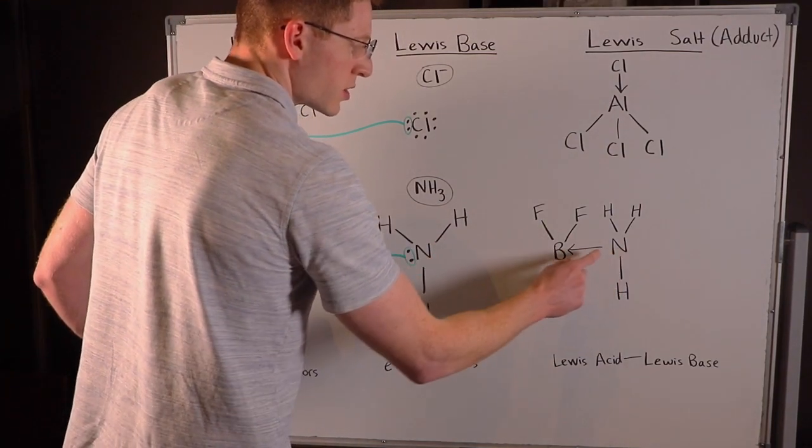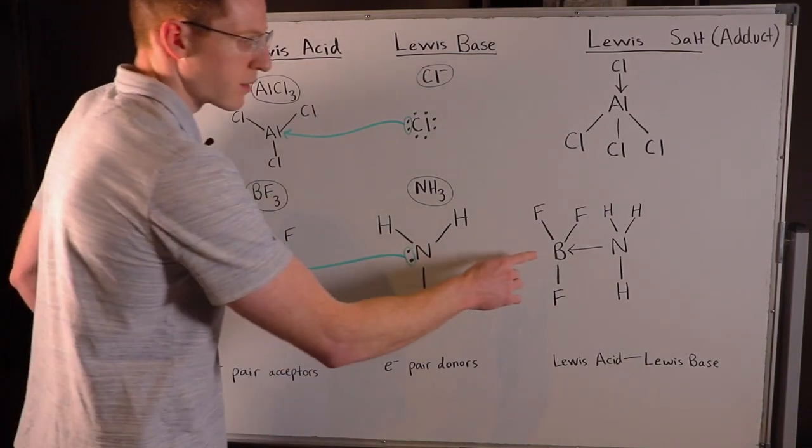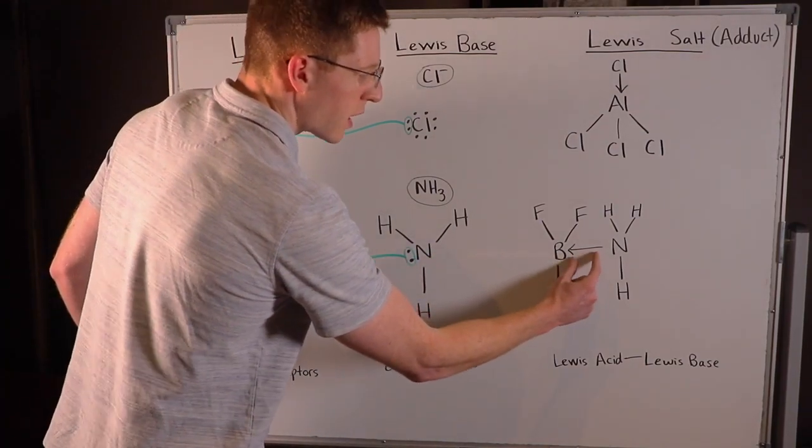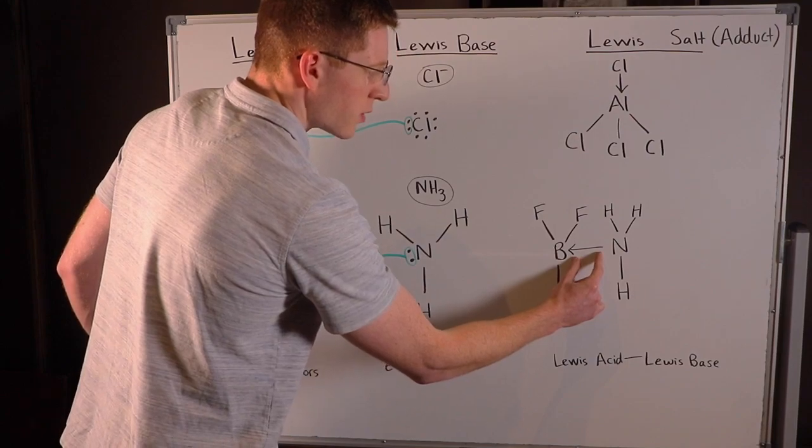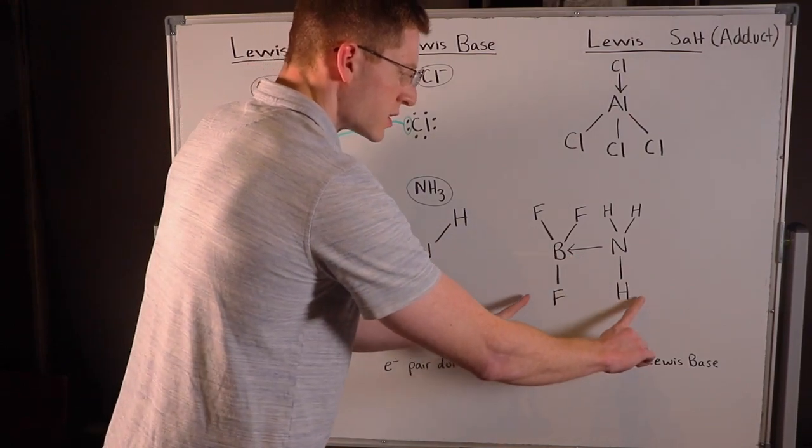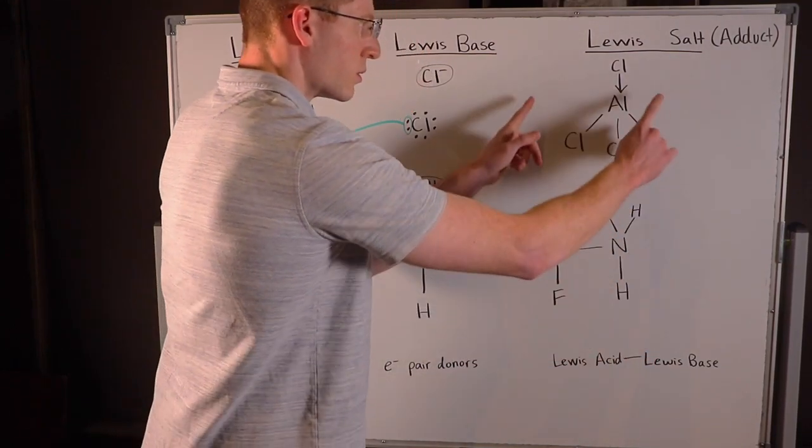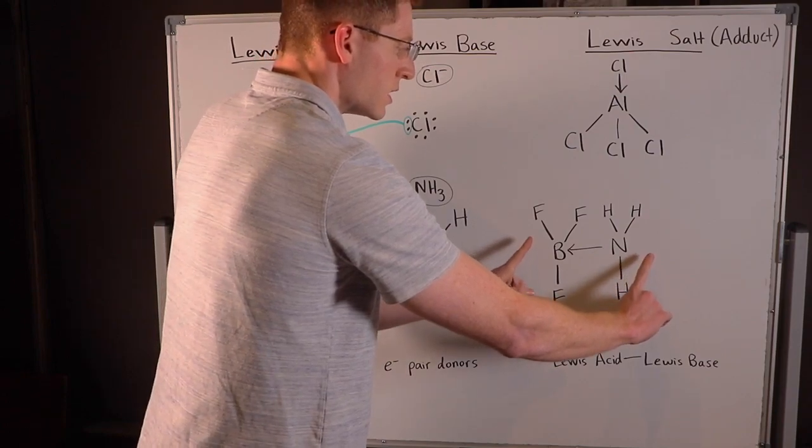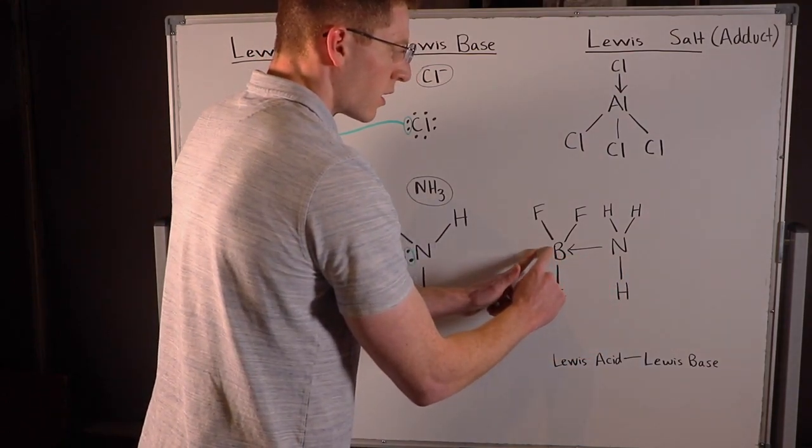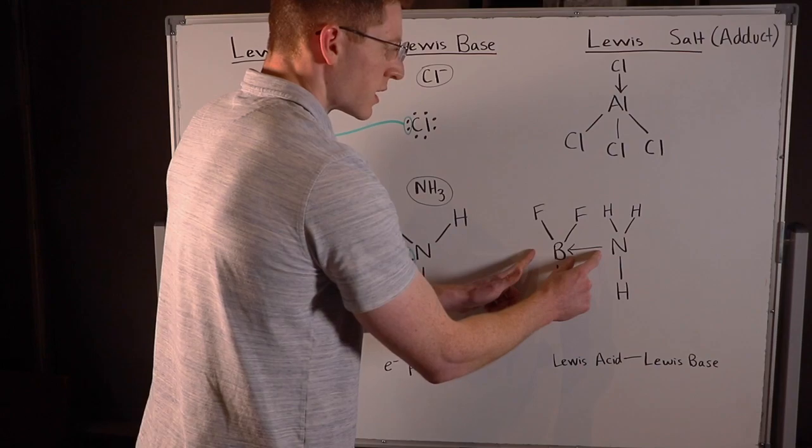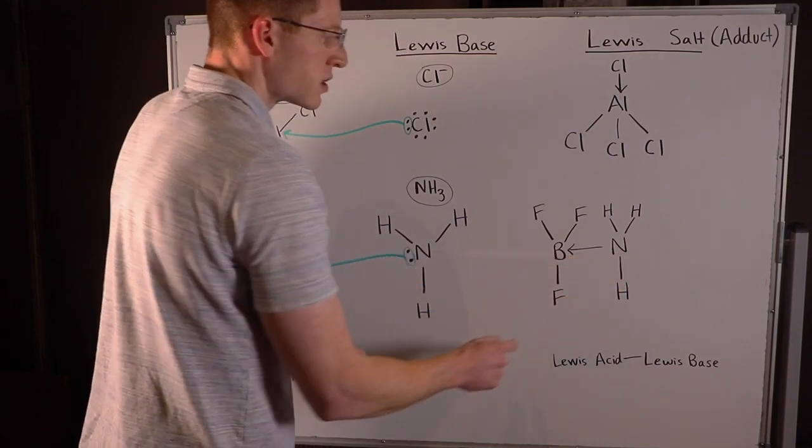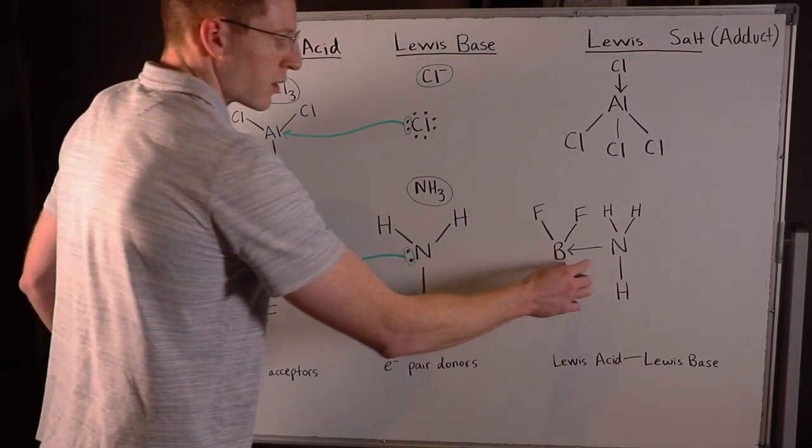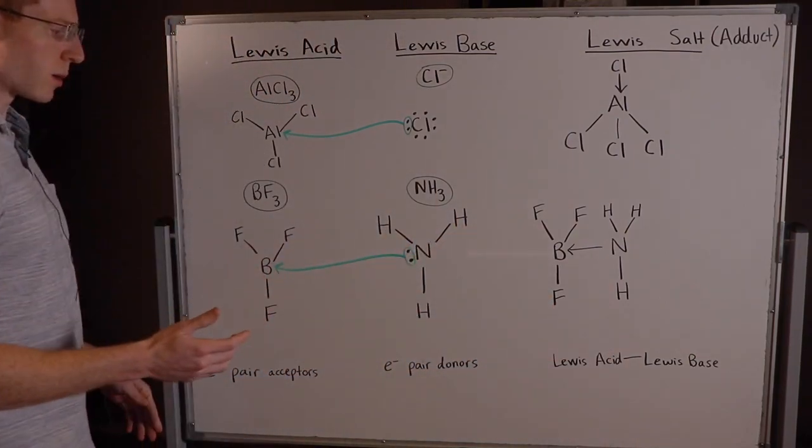In other words, if you were to calculate the formal charge around this boron atom, you would not include this bond. So even though we've created a Lewis acid-Lewis base pair here or a Lewis salt or adduct, you can't actually say that this boron has these electrons in its valence. Nitrogen still owns those electrons, although this bond here does satisfy the requirement for a Lewis salt.